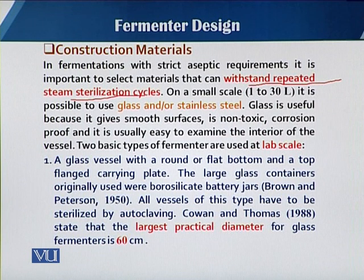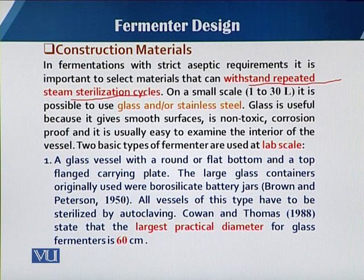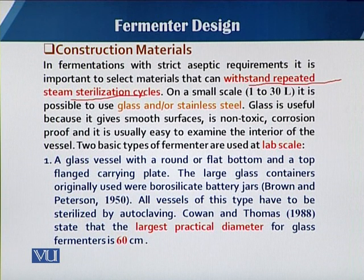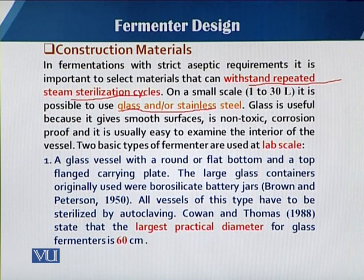When there is heat, the fermenter must be kept under pressure. In the autoclaving or sterilization process, the temperature normally has to be raised to 121 degrees Celsius and the pressure at that point is mostly 15 pounds per square inch. There are 2 major material options: one is glass and the other is stainless steel.